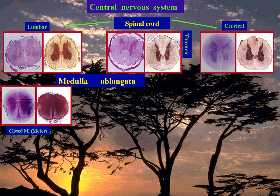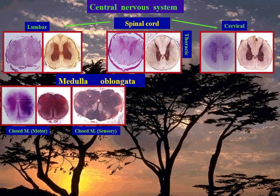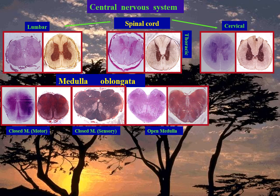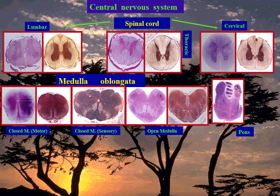Closed medulla at sensory decussation is the middle level, stained by silver. Open medulla, stained by hematoxylin and eosin and silver, represents the middle level of the brain stem. The lower level of the pons is examined, stained by hematoxylin and eosin and silver.